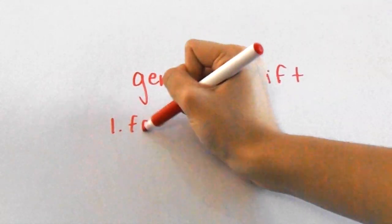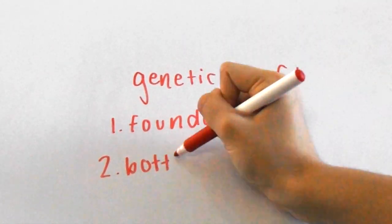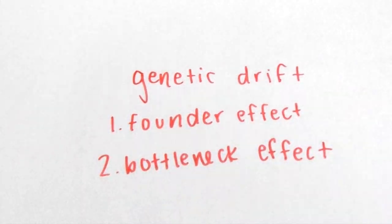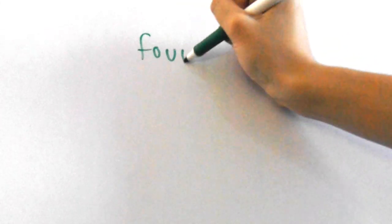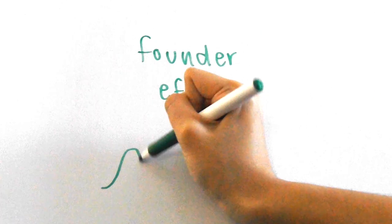There are two types of genetic drift, the founder effect and the bottleneck effect. The founder effect is when a small portion of individuals becomes isolated from the larger population.